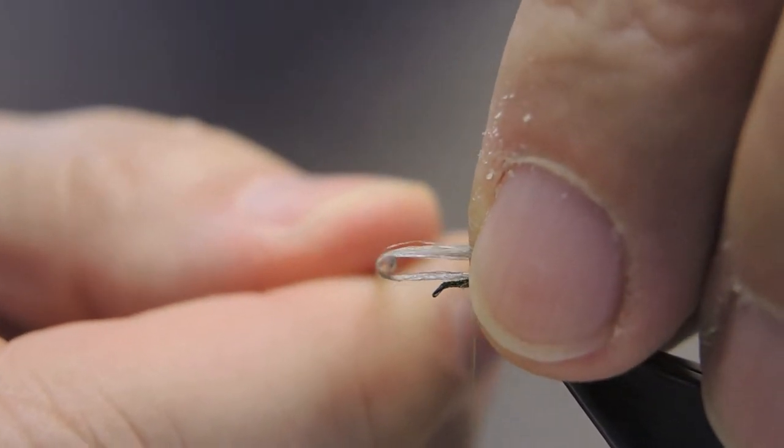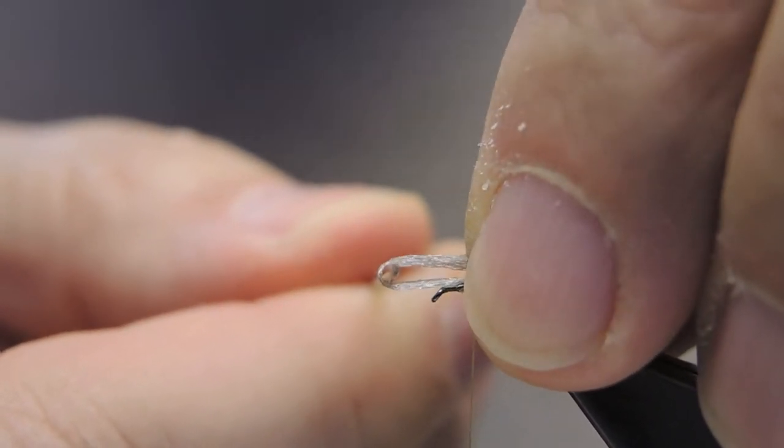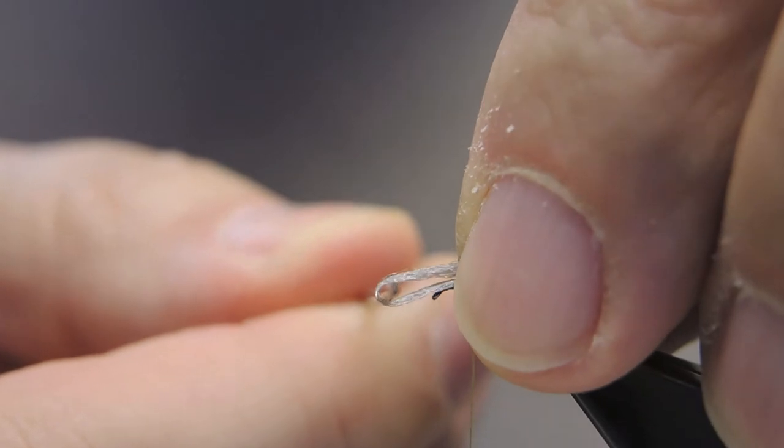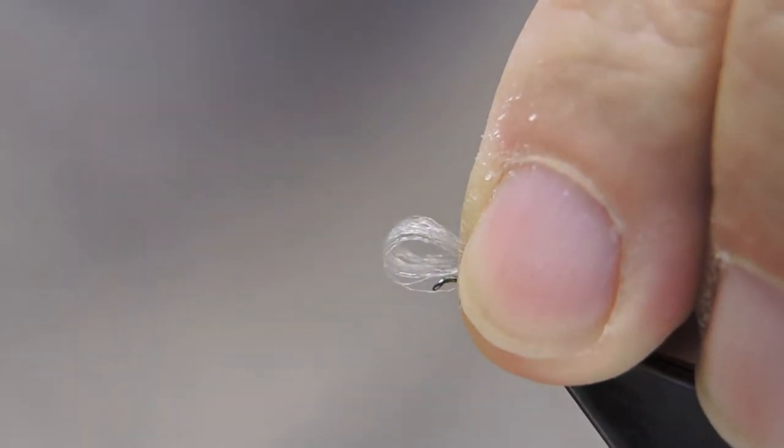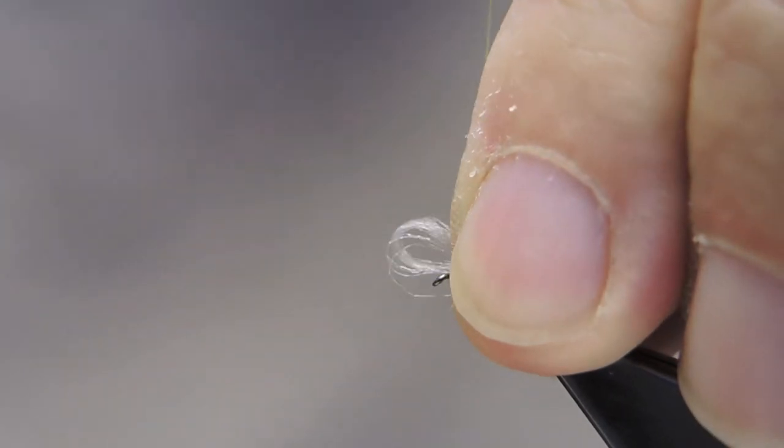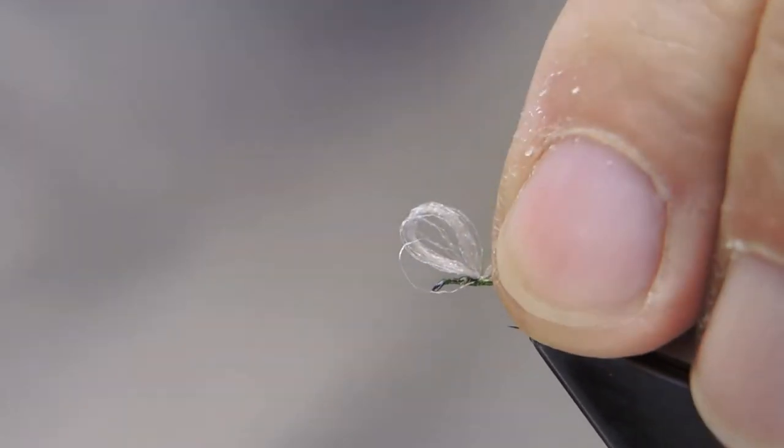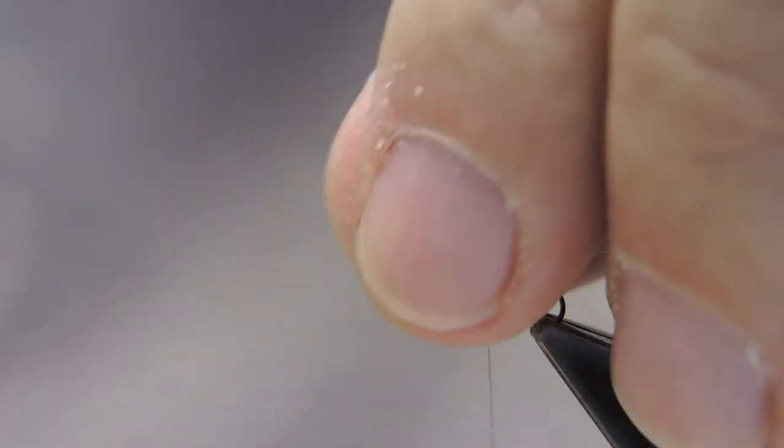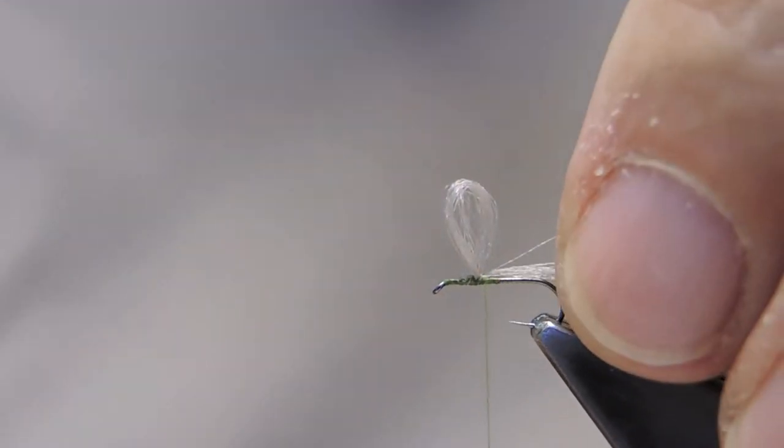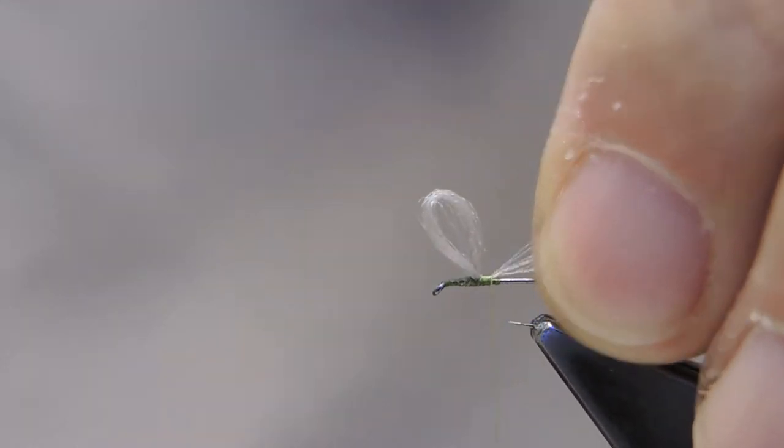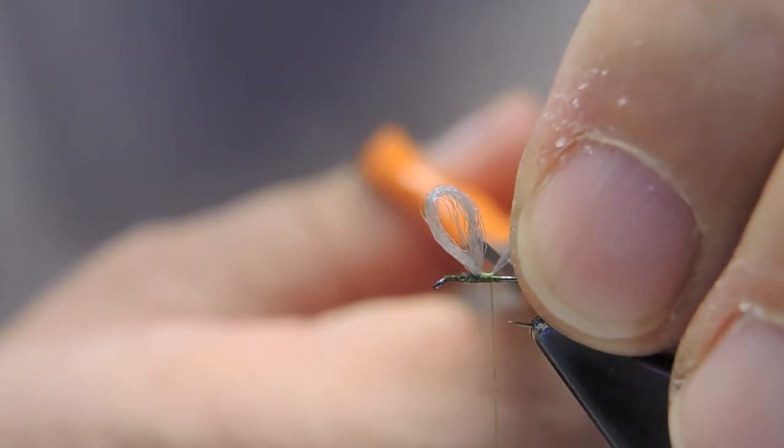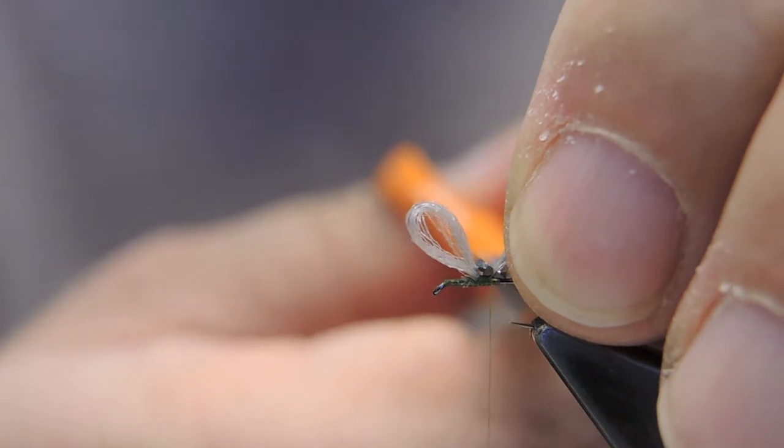The loop is made, length is about the length of the shank, and then tied down. Check for length, that's about right. Don't make it too long, as it will overturn or topple the fly.